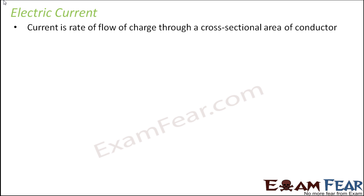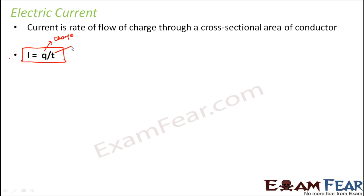We'll start with Electric Current. Current is the rate of flow of charge through a cross-sectional area of a conductor. Current, denoted by I, is equal to charge flowing per unit time: I = Q/T, where Q represents the charge and T represents the time taken for these charges to flow.